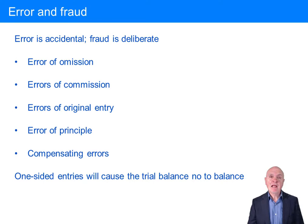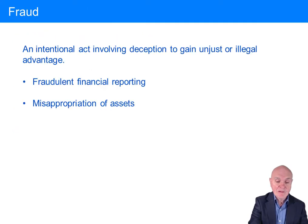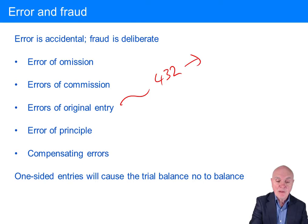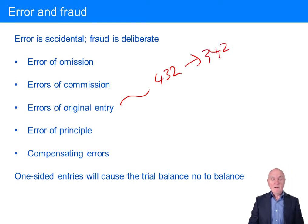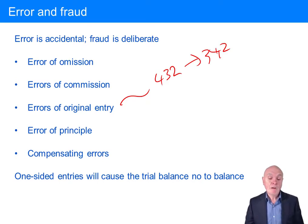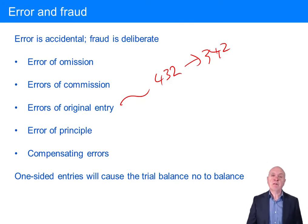Error of original entry is where, for example, the invoice is for 432, but instead you put it in as 342. So everything about that invoice — the sales, the receivables — is wrong. It's certainly not going to cause the trial balance not to balance, but it's called an error of original entry because the very first appearance of this transaction in the financial records is wrong.